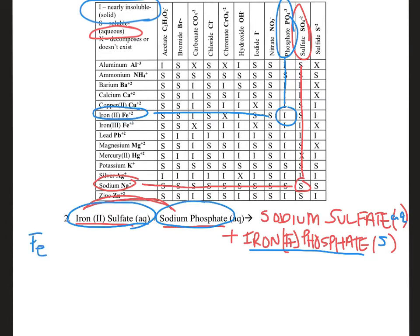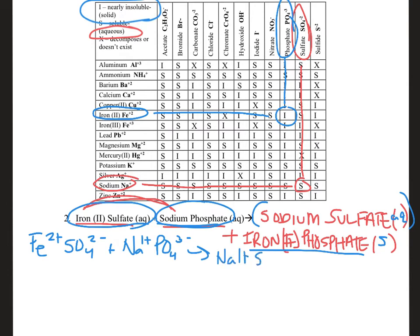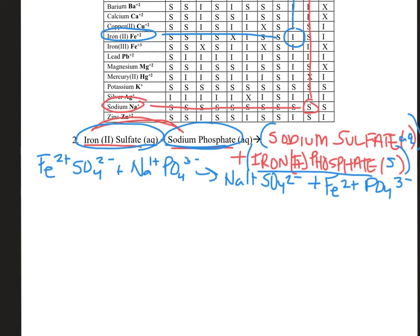If I've got iron two sulfate, iron's 2+. According to the chart, sulfate is 2 minus. Next up is sodium phosphate — sodium is +1, phosphate is PO4 with a negative 3 charge. After that, we have sodium sulfate: sodium has a +1 charge and sulfate has a 2 minus charge. And then iron two phosphate: iron two means a 2+ charge, and phosphate, which is PO4, has a 3 minus charge. Now that we have our notes, we can put our compounds together. Two plus and two minus cancel out, so iron two sulfate is just FeSO4 (aq).